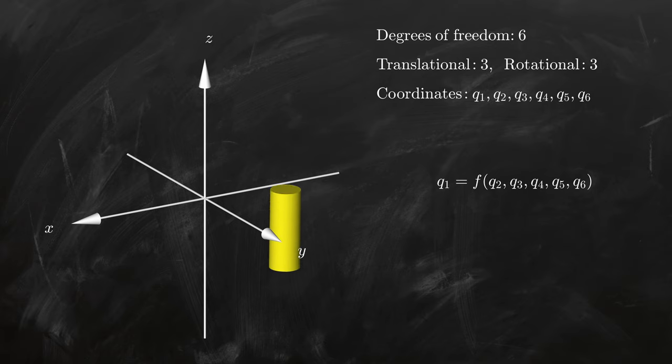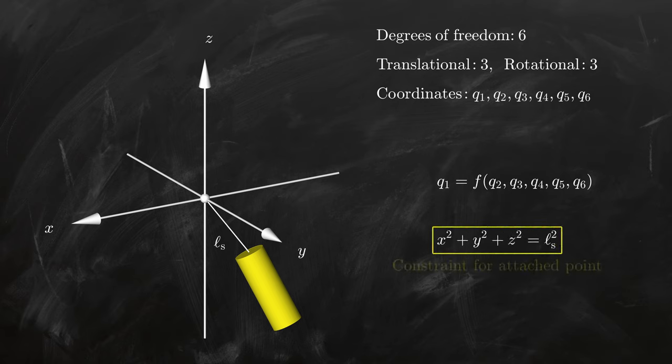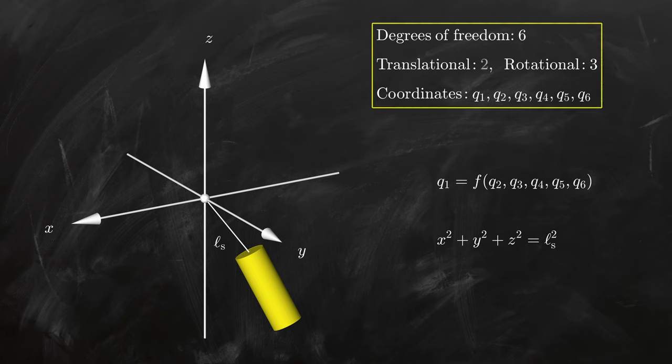For example, we could place a pivot at the origin, and attach the cylinder to it with a light string, having some constant length Ls, such that the x, y, and z coordinates are related. This constraint effectively kills one translational degree of freedom, and leaves us with a cylindrical pendulum.